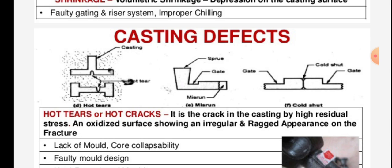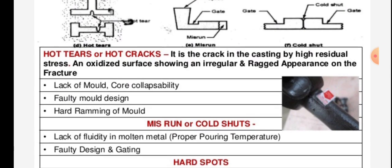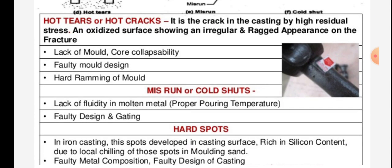The next casting defects are hot tears, misrun, and cold shut. Hot tears and hot cracks are cracks in the casting caused by high residual stress, showing an irregular and ragged appearance on the fracture. Causes of hot tears include lack of mold and core collapsibility, faulty mold design, and hard ramming of the mold.